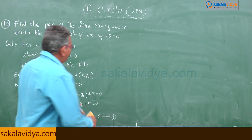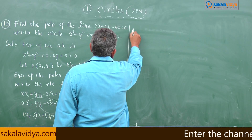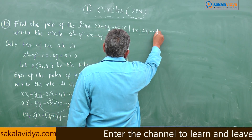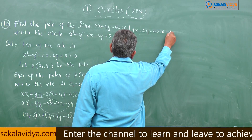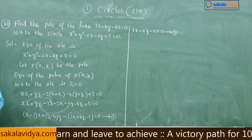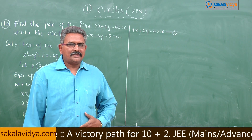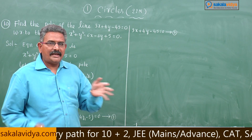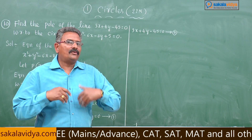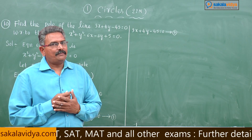Now consider the given line 3x + 4y - 45 = 0, call this equation 2. Equations 1 and 2 represent the same line — they are coincident lines. If they are coincident lines, then a1/a2 = b1/b2 = c1/c2.